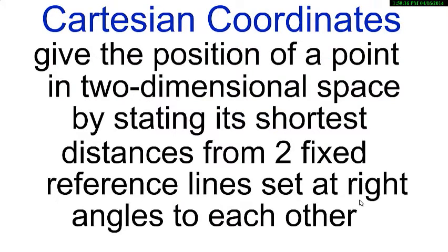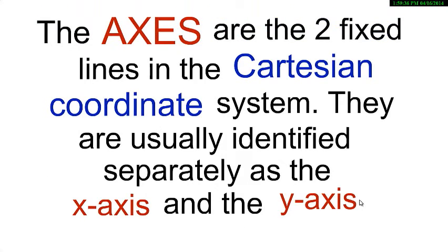The Cartesian coordinates give the position of a point in two-dimensional space by stating its shortest distance from two fixed reference lines set at right angles to each other. The distances may be given as positive or negative values. The axes are the two fixed lines in the Cartesian coordinate system. They are usually identified separately as the x-axis and the y-axis.